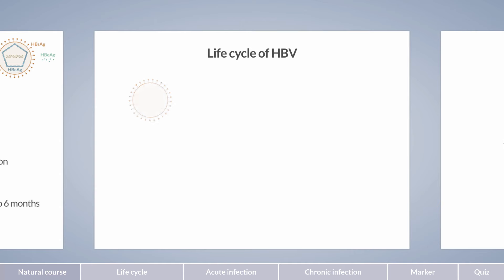Hepatitis B virus consists of an envelope and a capsid, which contains the viral DNA. Three antigens are of relevance for hepatitis B serology. First, the HBs antigen is part of the envelope. HBs stands for hepatitis B surface. A positive HBs antigen indicates active infection, as the antigen is present on the viral surface.